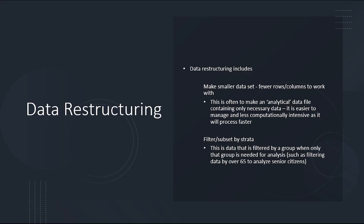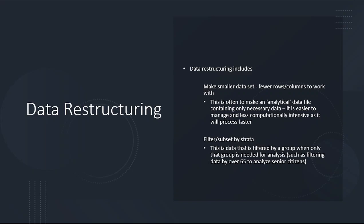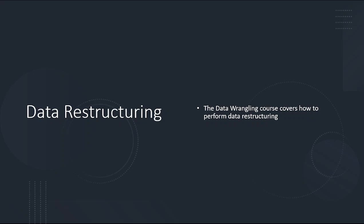Another option is just making a smaller dataset: if you have 100 columns but only need five, create a smaller analytical file instead of working with all 100 columns. In the old days this was important for computational efficiency, but these days it's mainly just easier to work with. You can also filter your data — for example, if you only want people over 65, filter by age and work with that restructured dataset. This is all stuff that data wrangling covers, but you might do this before data mining if you only care about certain age groups.